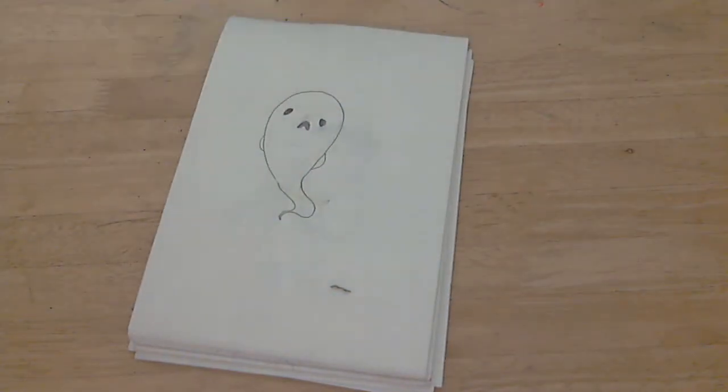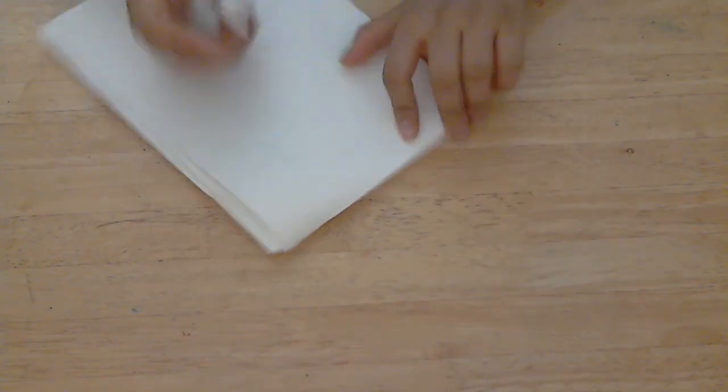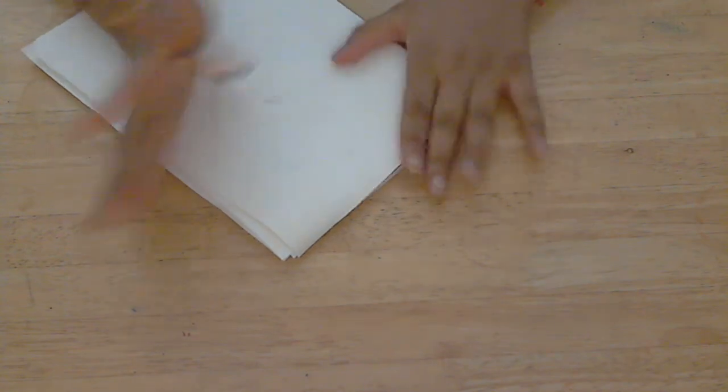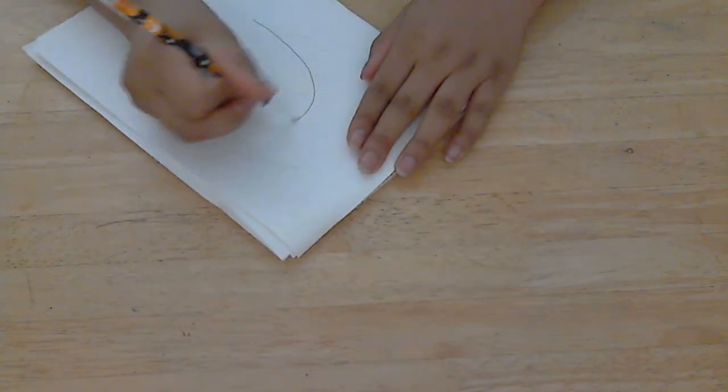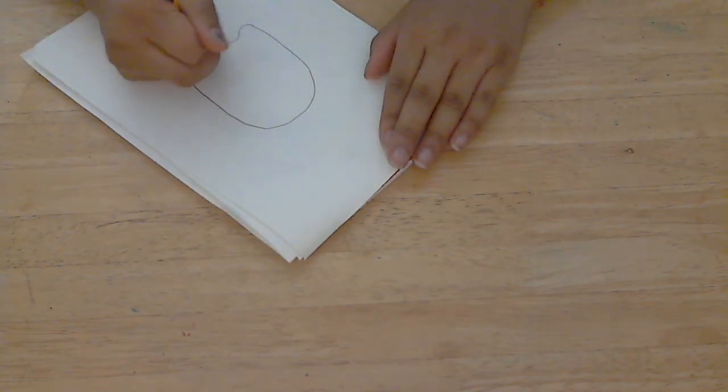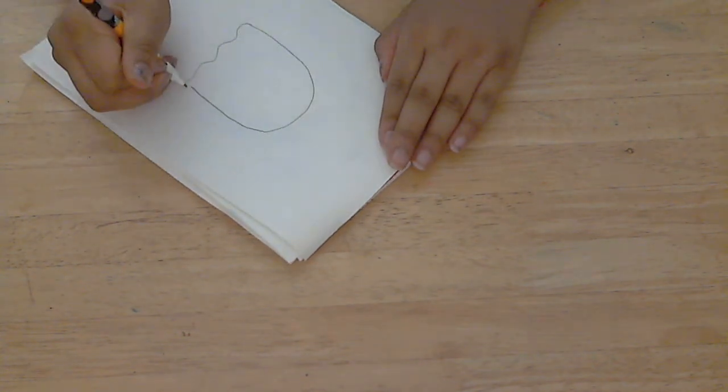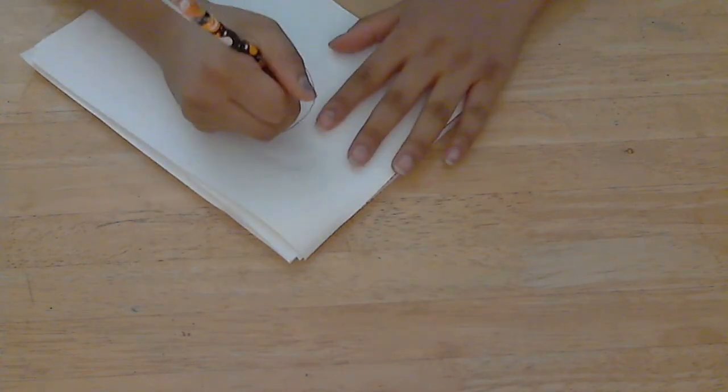And now I'm going to do a different one. And now this is a very, very easy ghost. So you're just going to draw a rainbow line like that, and then some squigglies, and a ghost face. And you are done.